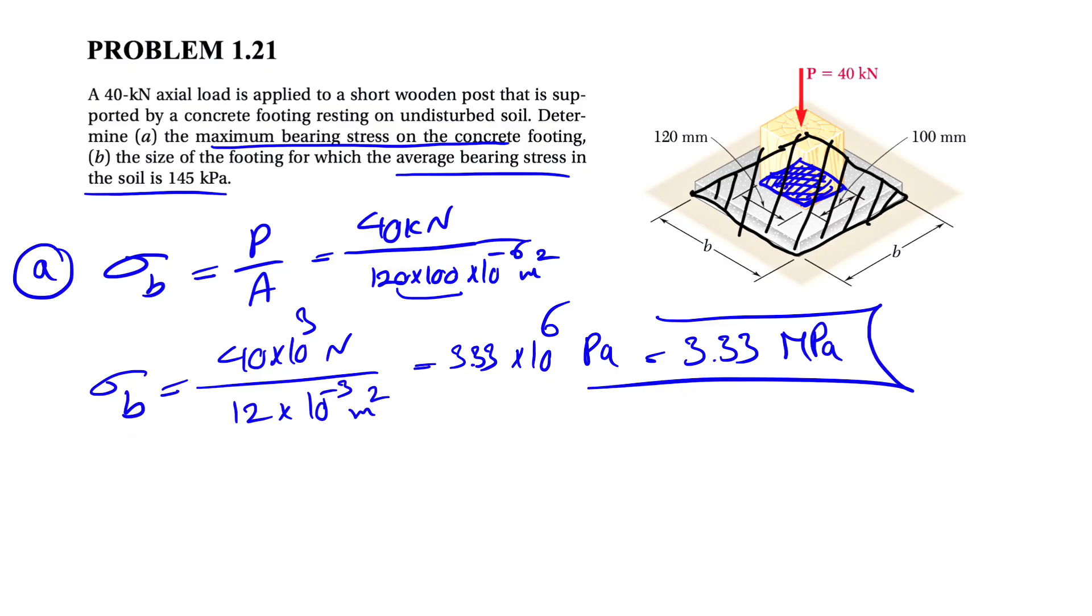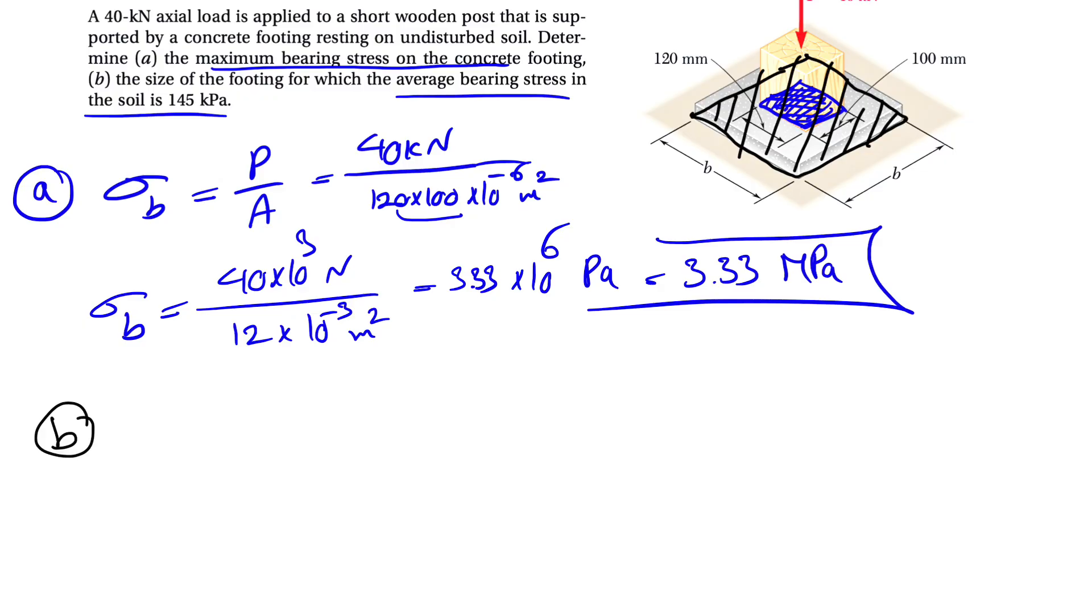The given bearing stress in the soil is 145 kilopascals. And we have the same thing, the force P over the area of the soil. We can show it with AS.